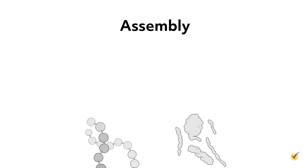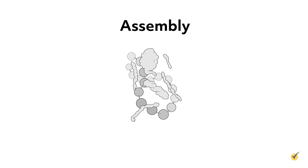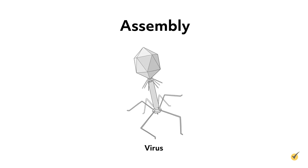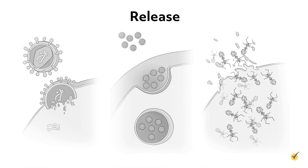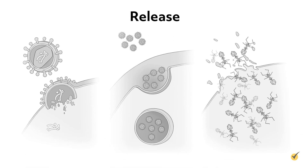The fifth stage is assembly, during which the pieces of nucleic acid and proteins come together to form new viral particles, which mature until they're ready for the sixth and last stage, release. Release sends new virions out of the host cell. These new virions are now able to infect additional cells and continue the cycle. Release can occur through three mechanisms depending on the type of virus: budding, exocytosis, and cell lysis.